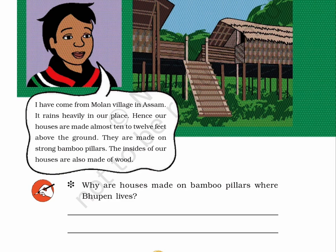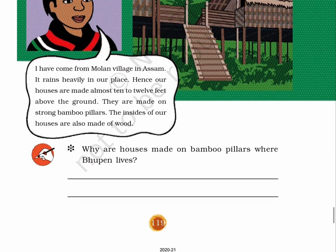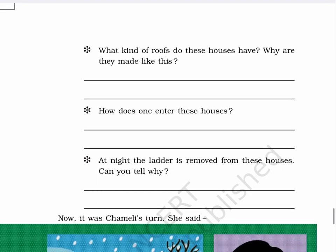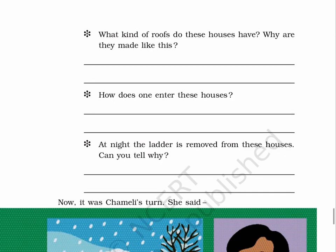The insides of our houses are also made of wood. Questions: 1. Why are houses made on bamboo pillars where Bhupen lives? Write your answer in the space provided below. Page No. 120. 2. What kind of roofs do these houses have? Why are they made like this? Write your answer in the blank space given here. 3. How does one enter these houses? Write your answer in the space provided. 4. At night, the ladder is removed from these houses. Can you tell why? Write your answer in the blank space given here.